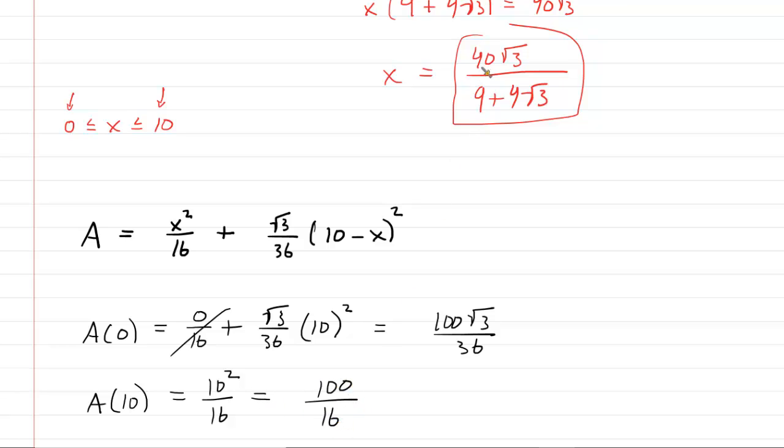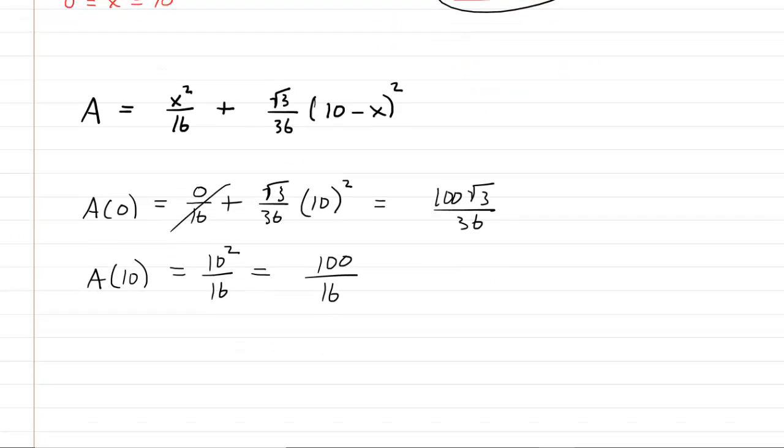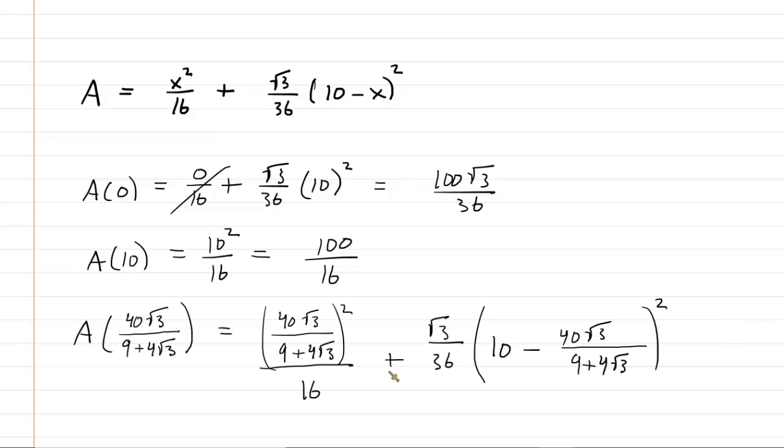Now comes the fun part. We have to plug in 40 radical 3 over 9 plus 4 radical 3 into the area function. Okay, so I've written it out right here. It's a really ghastly thing. And I punched it into my calculator because I didn't feel like simplifying that. And I got about 2.72. And then as for the other values, plugging in the endpoints, the lower endpoint, if we simplify that one, that is about 4.81. And then this is exactly 6.25.